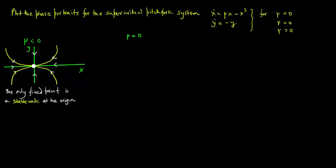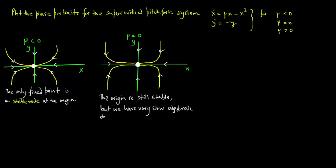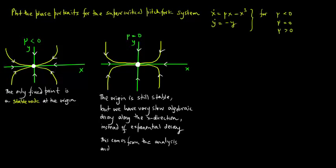With mu equal to 0, the origin is still stable, but we have very slow algebraic decay along the x-direction instead of exponential decay. This comes from the analysis and the intuition obtained from the one-dimensional pitchfork system.